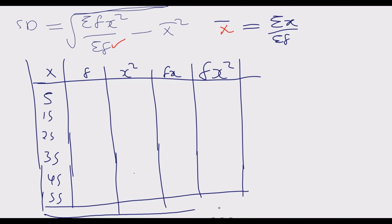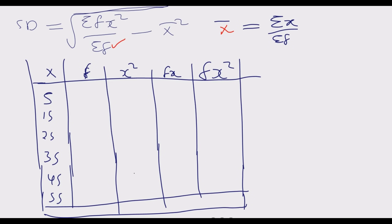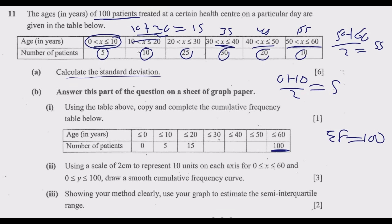Now set up the table with totals at the bottom. The frequencies from the question are: 5, 10, 25, 30, 20, 10. Enter these into the frequency column corresponding to midpoints 5, 15, 25, 35, 45, and 55 respectively. These are the values picked directly from the original data table.